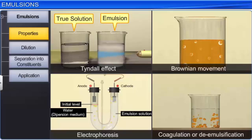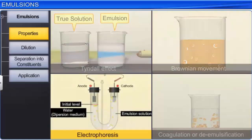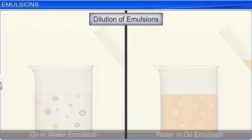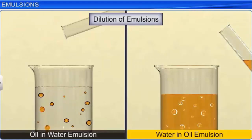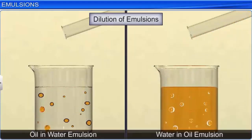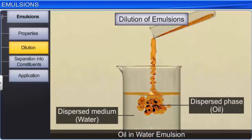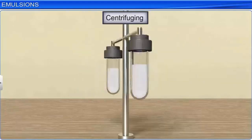Emulsions exhibit properties similar to colloids, like the Tyndall effect, Brownian movement, electrophoresis, and coagulation or de-emulsification on the addition of electrolytes. Emulsions can be diluted by adding any amount of the dispersion medium — that is, water for oil and water type emulsion, and oil for water and oil type of emulsion. On the other hand, if the dispersed phase is added to an emulsion, it forms a separate layer. An emulsion can be separated into its constituent liquids by boiling, freezing, centrifuging, electrostatic precipitation, etc. A well-known example of centrifuging is the separation of cream from milk.